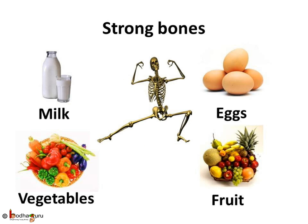We should take a healthy diet. The bones are made up of calcium and phosphorus — minerals. The bones get brittle, meaning they break easily, due to lack of calcium and phosphorus in our food. So we should eat food like milk, vegetables, fruits, and eggs.